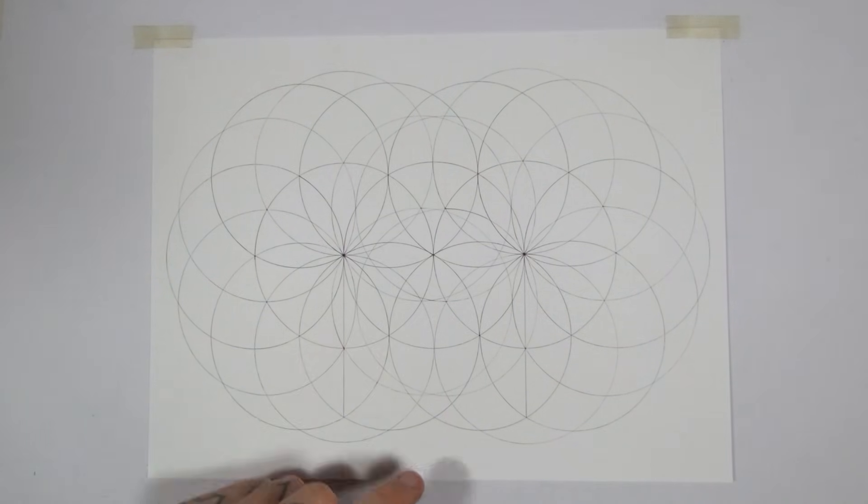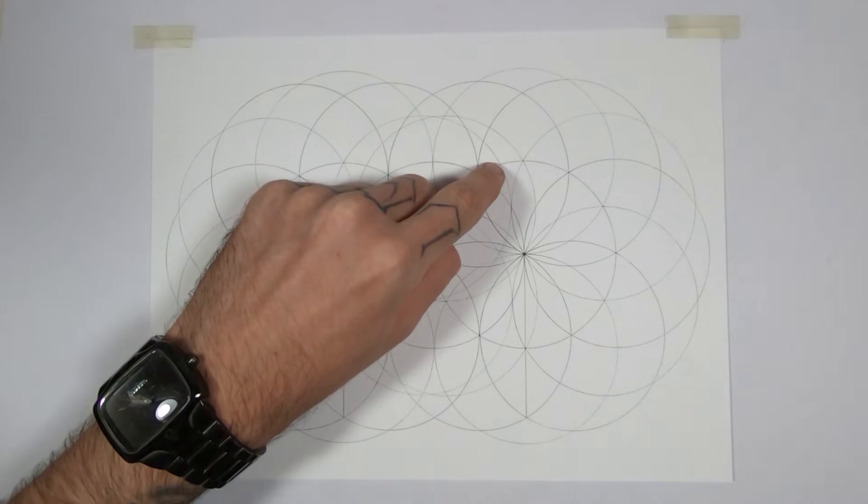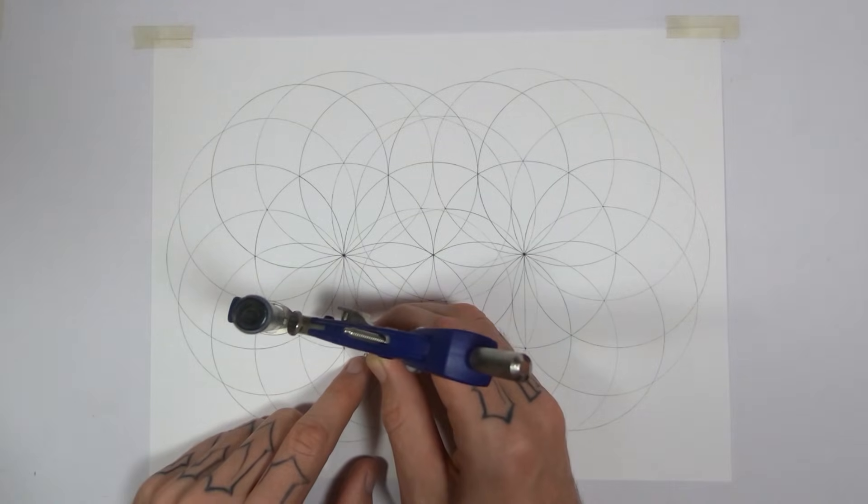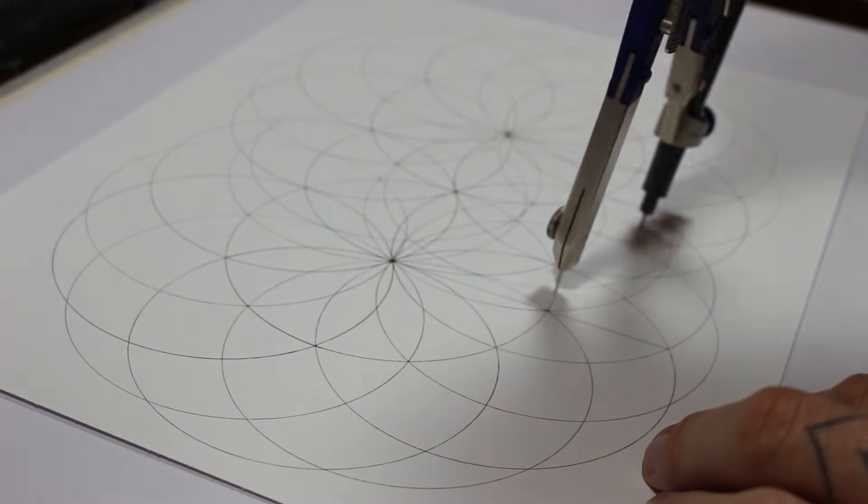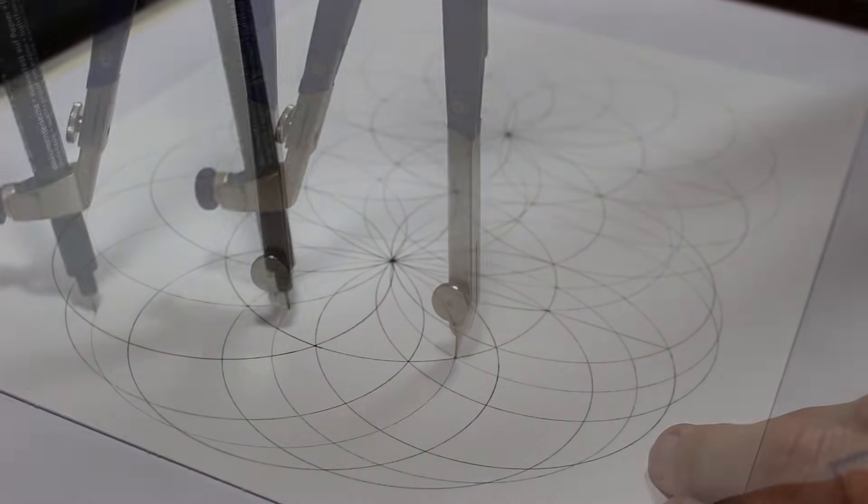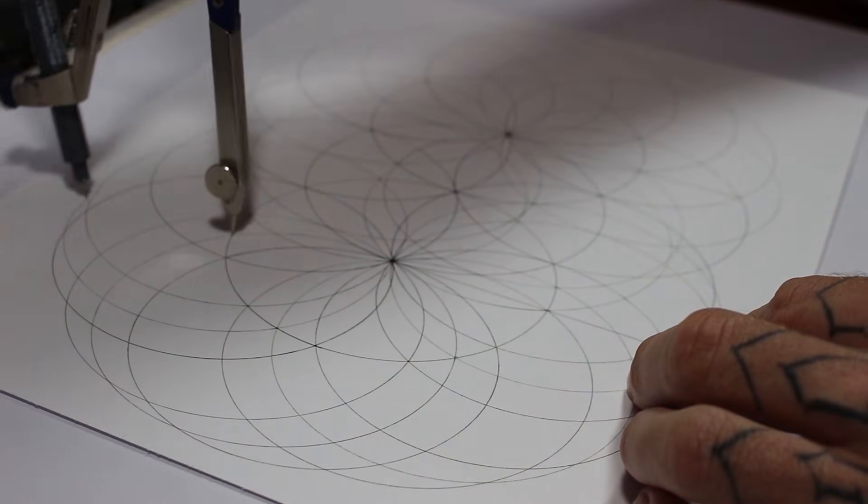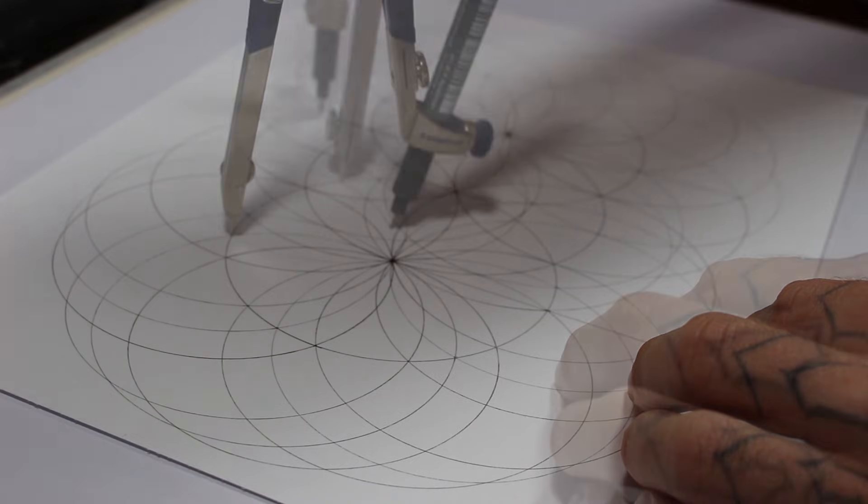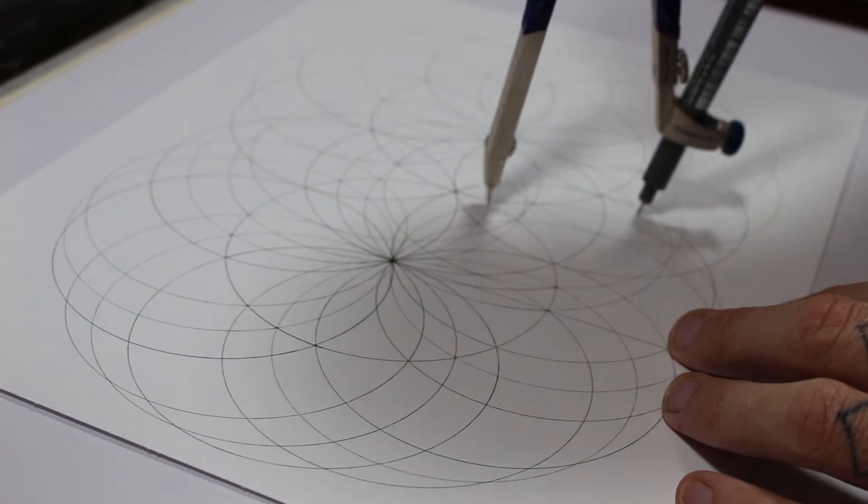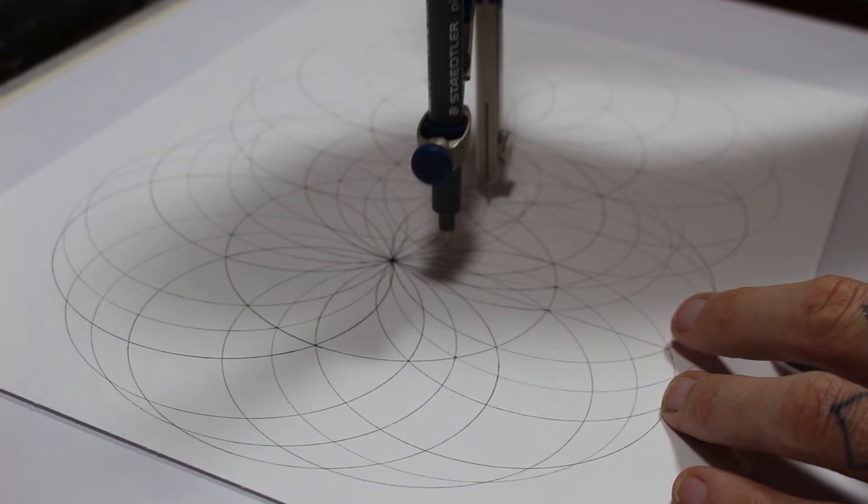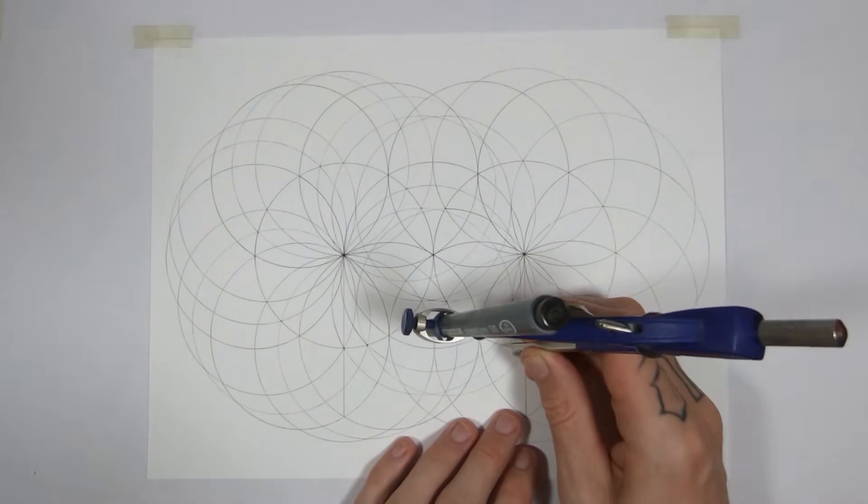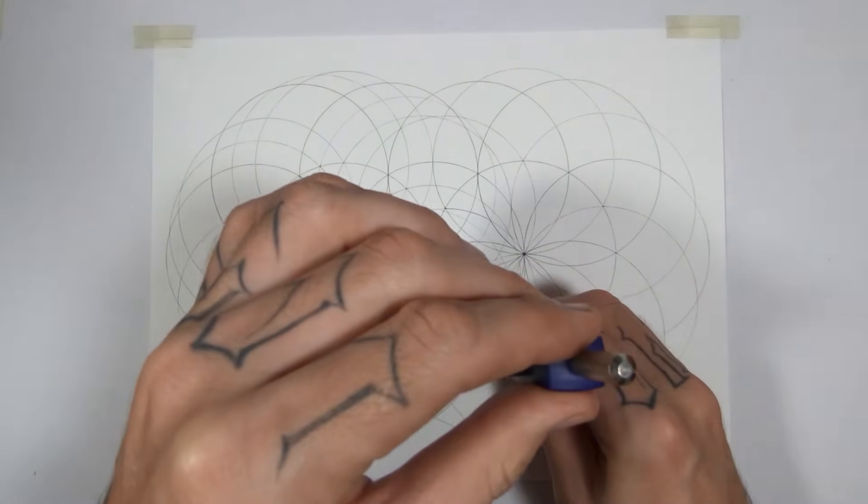And you'll notice this section is already divided in two by one of the circles we just made. So we're going to use that as our next starting point. And do the same thing, draw six circles all the way around. And I'll mirror it onto the other side.